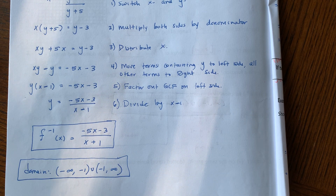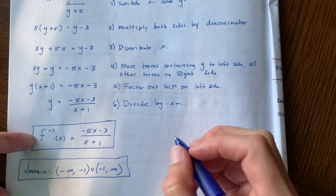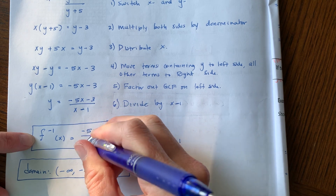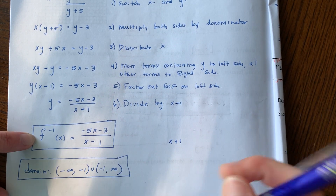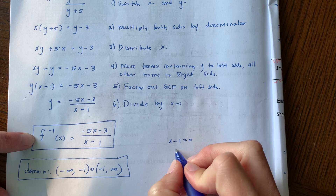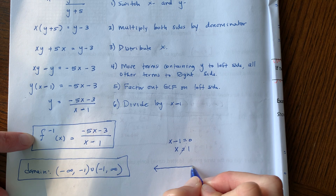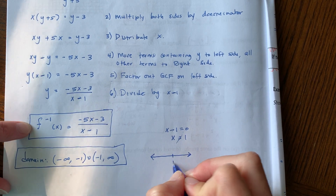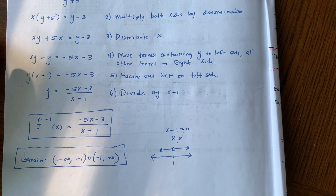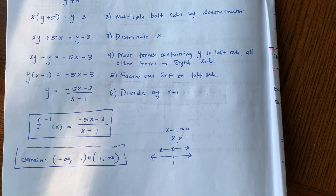Now find the domain. The inverse is also a rational function, so to find the domain, we set the denominator equal to 0 and solve. I'm going to set x minus 1 equal to 0 and solve, and that means x is equal to 1. What that tells me is x cannot be 1. So on the number line, I have an open circle over 1, and my domain would be negative infinity to 1, union 1 to infinity.